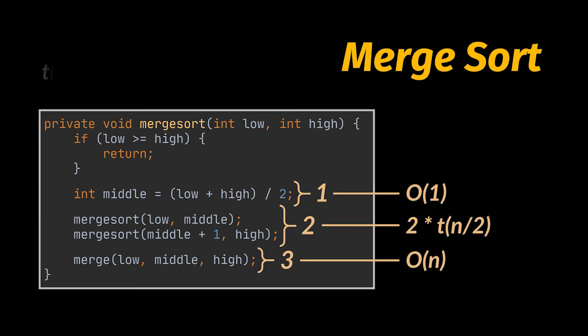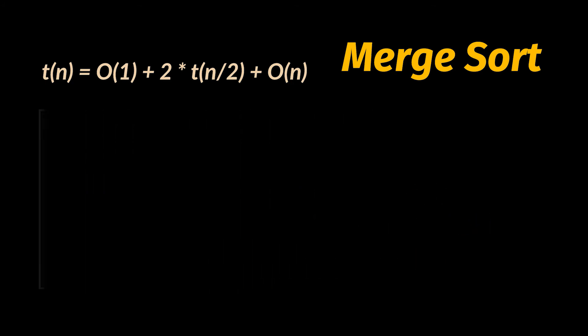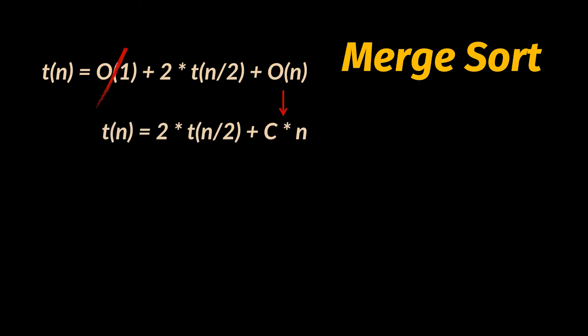Summing the complexities of all three steps: T(n) = O(1) + 2·T(n/2) + O(n). Disregarding O(1) and writing O(n) as a linear function c·n, we get T(n) = 2·T(n/2) + c·n. To find T(n), we replace T(n/2) by substituting n/2 into the equation, giving T(n/2) = 2·T(n/4) + c·n, and substituting back: T(n) = 4·T(n/4) + 2c·n.